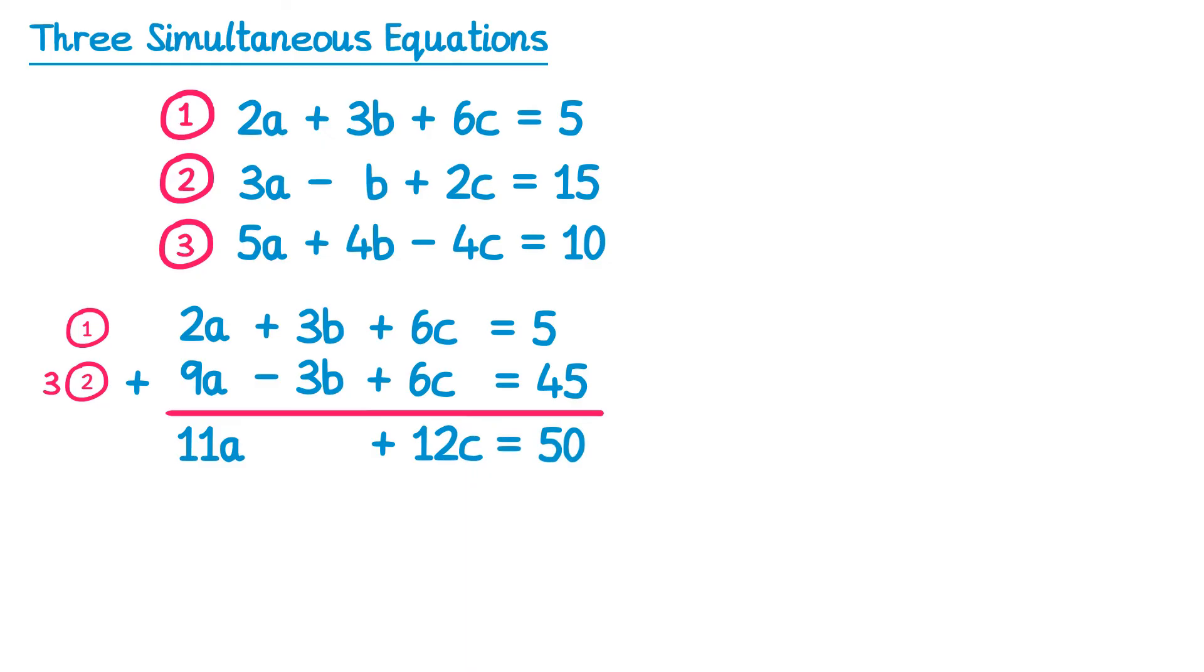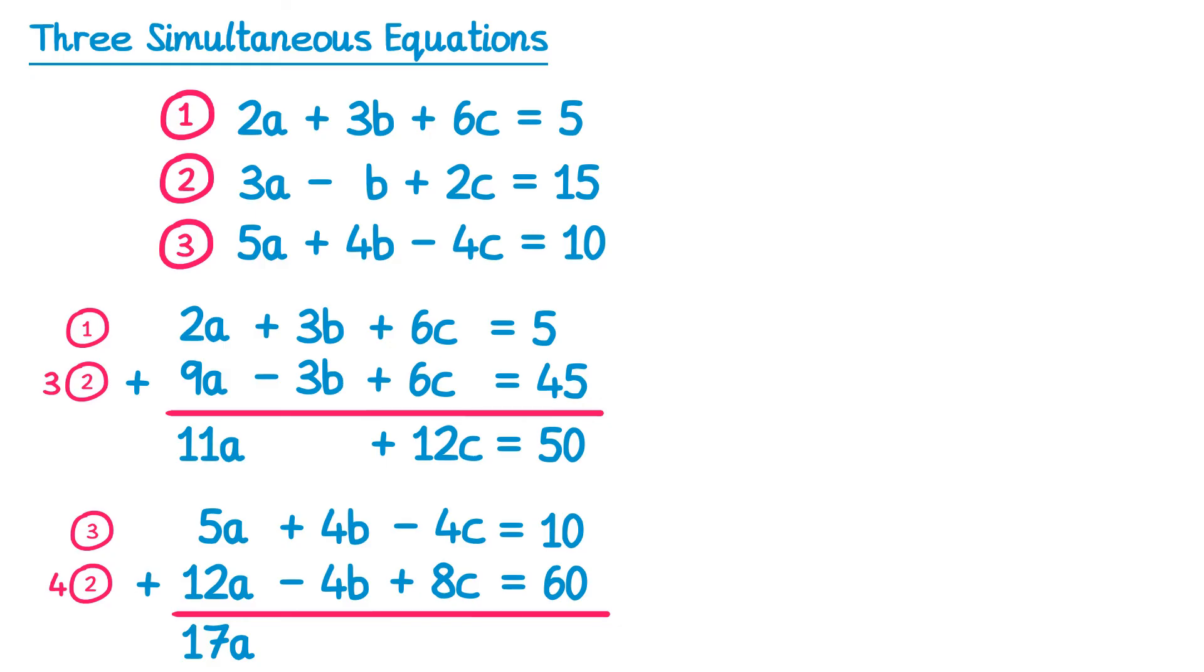This time I'll use equations 2 and 3. I'll keep equation 3 the same, so 5a plus 4b take 4c equals 10, but for equation 2 I'm going to times it by 4. So 3a times 4 is 12a, negative b times 4 is negative 4b, 2c times 4 is plus 8c, and 15 times 4 is 60. Now I can add the equations together. So 5a add 12a is 17a, 4b add negative 4b gives you 0, negative 4c add 8c is 4c, and 10 add 60 is 70.